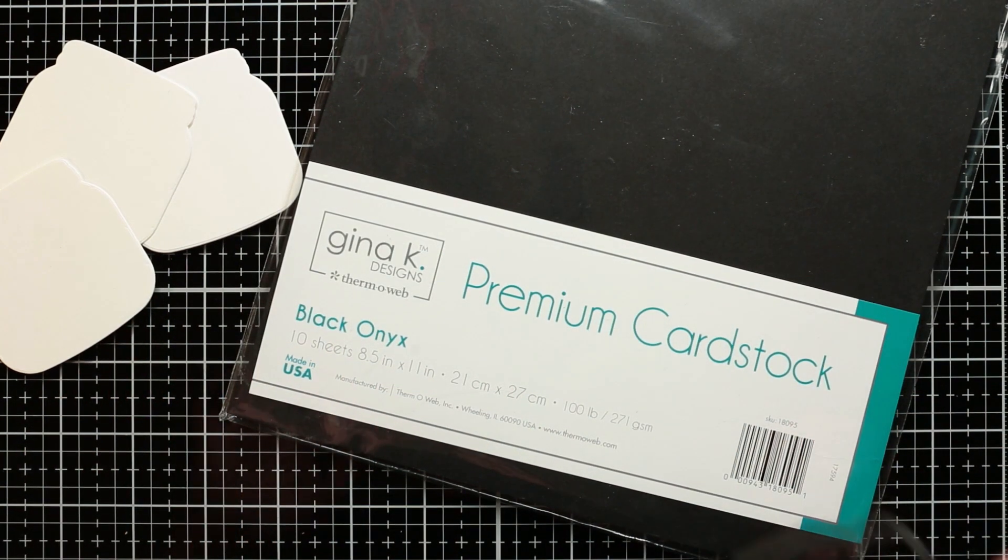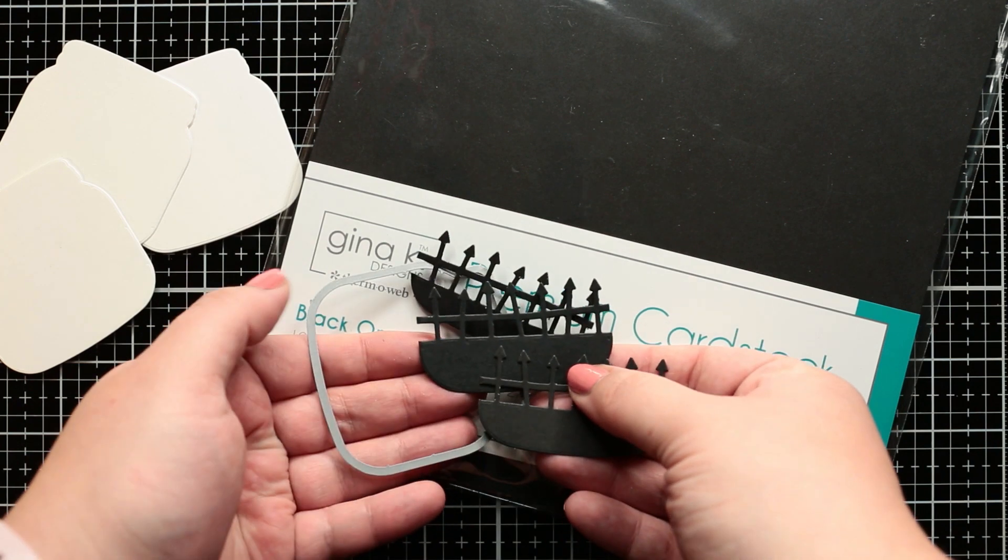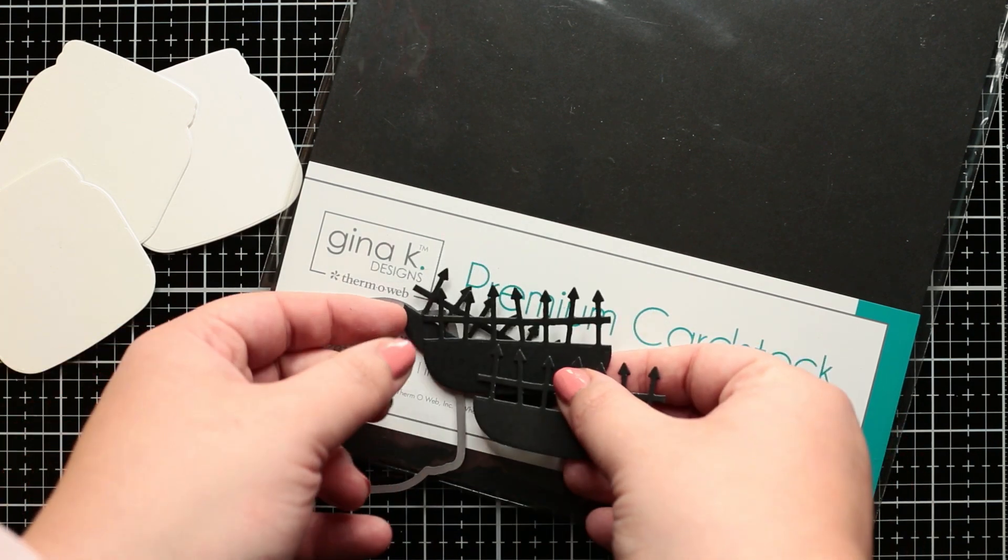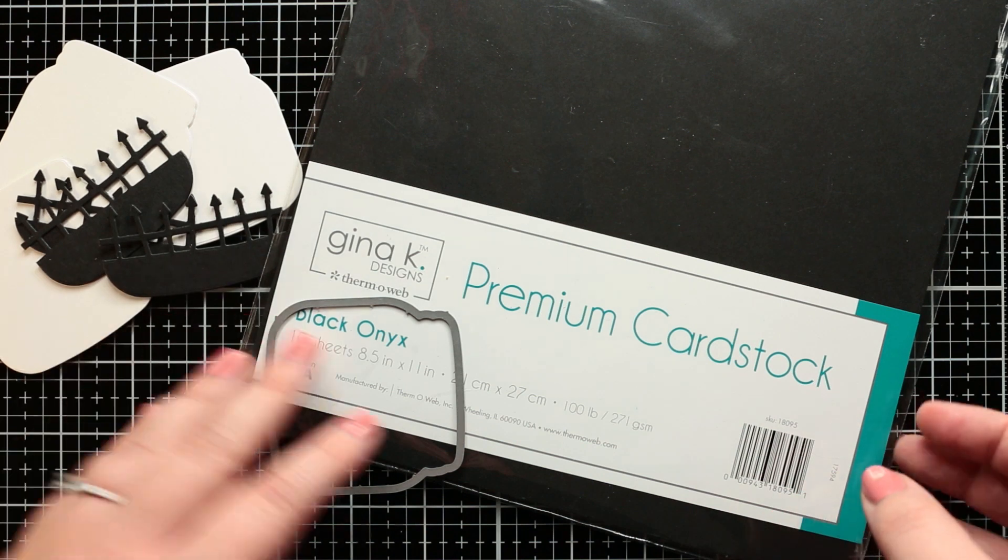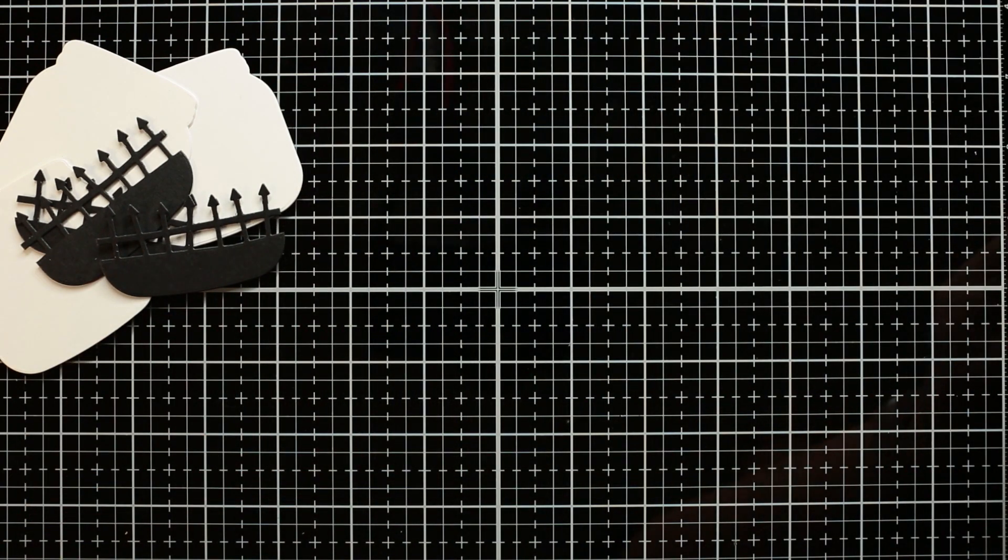And because I don't want to measure and fussy cut, I run this die cut with a larger piece of die from the Have You Been add-on die set as well.